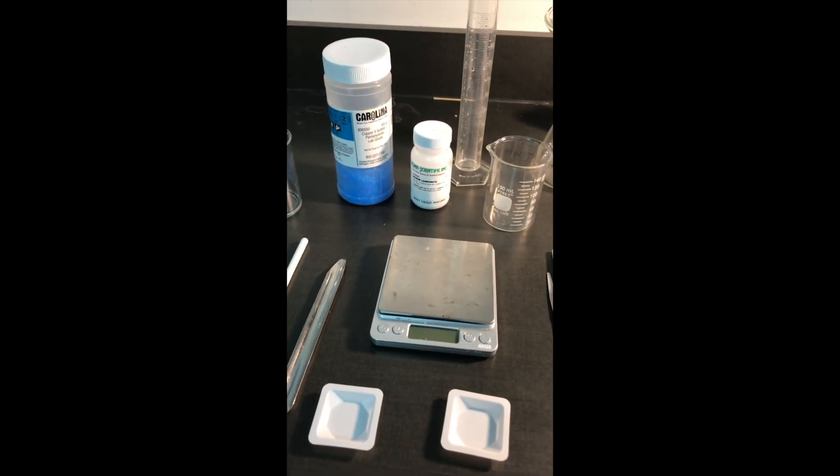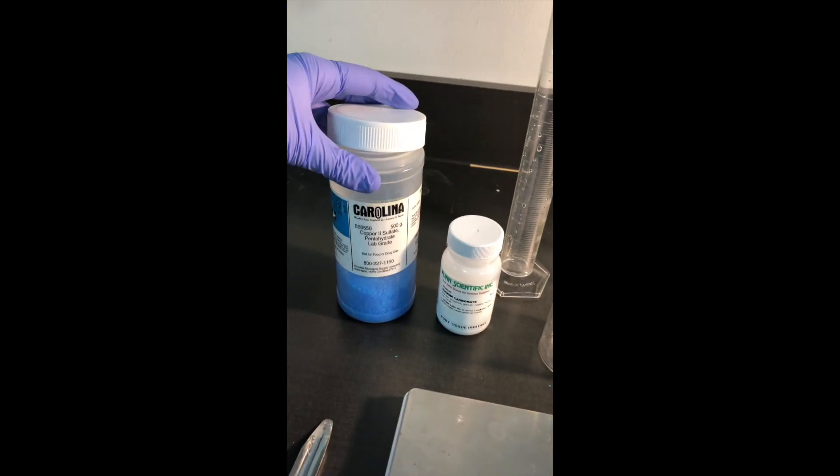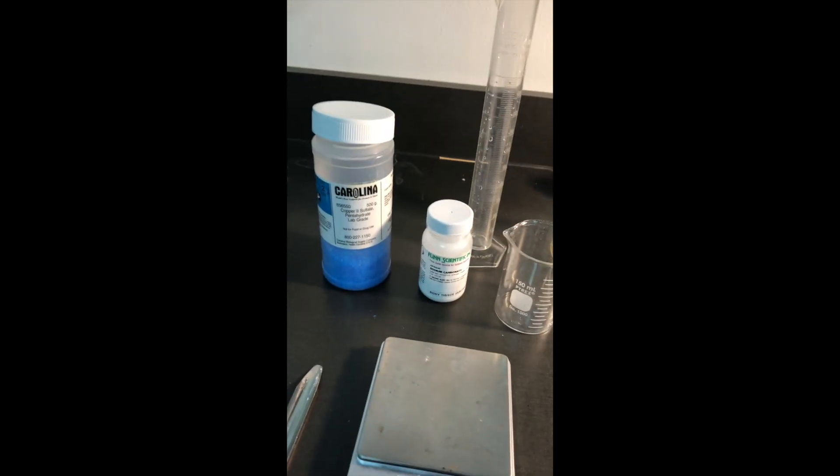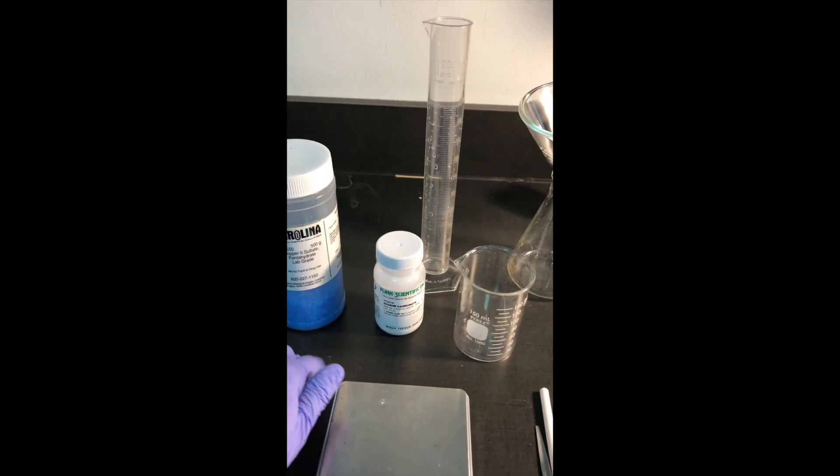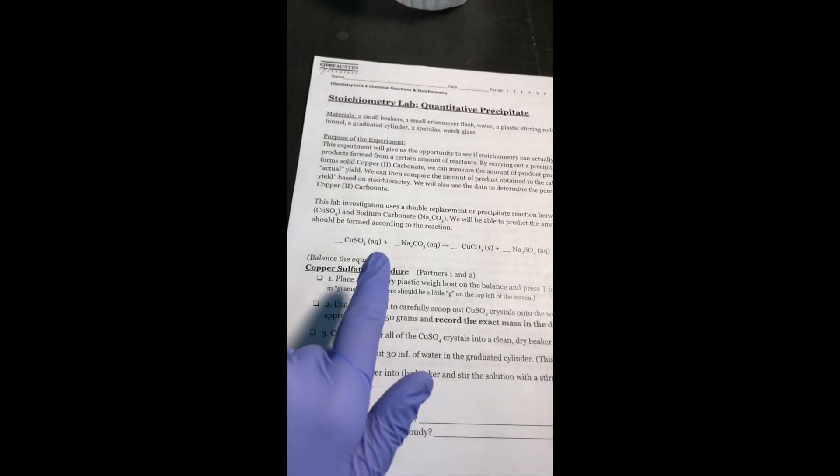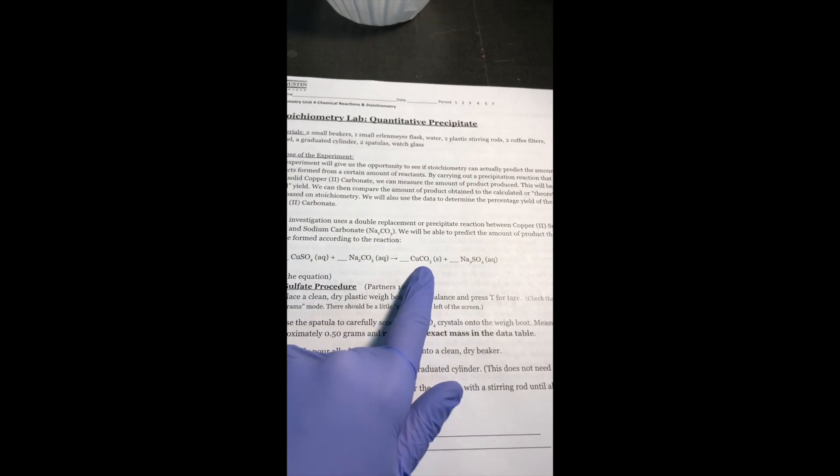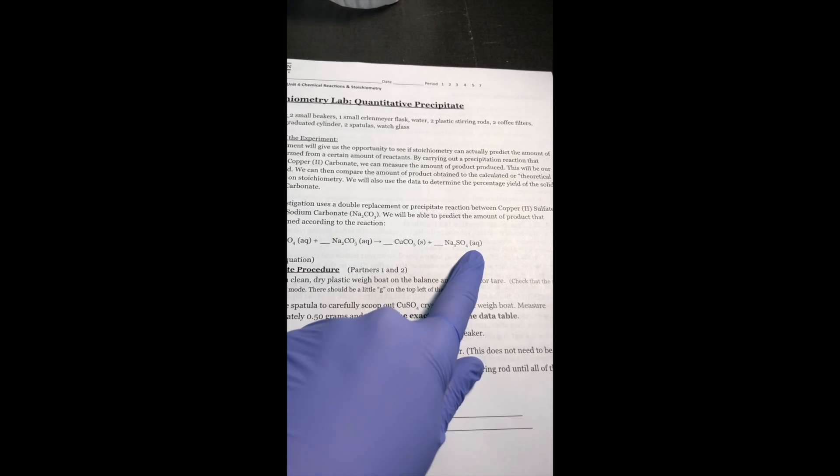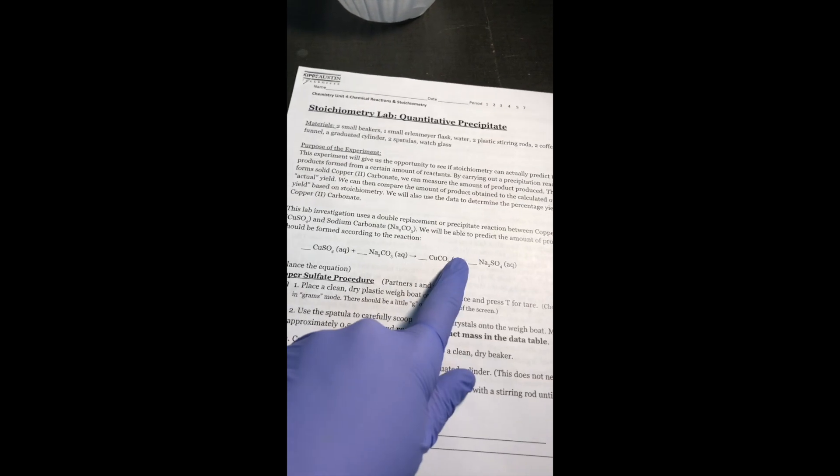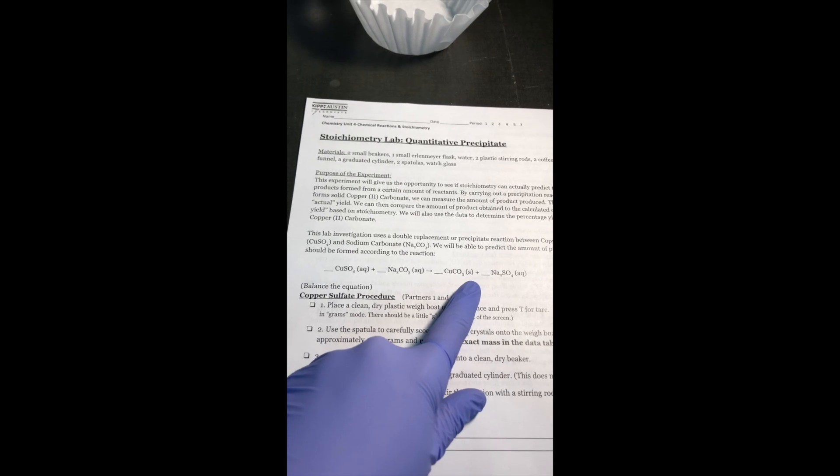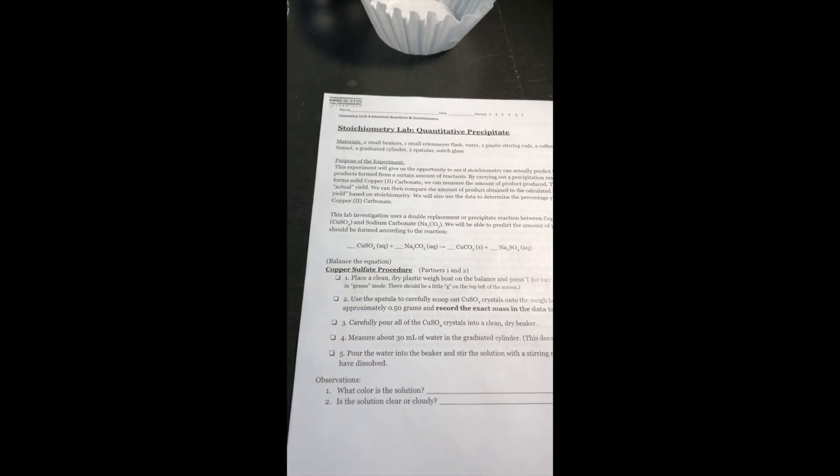We're going to do a double replacement reaction with copper sulfate and sodium carbonate. We're going to make two solutions of these crystals, stir together those solutions and make some products. The products will be, according to my chemical equation, copper carbonate, which will be solid, and sodium sulfate, which will be aqueous or in solution. What we're going to look for is that solid copper carbonate product. We're going to dry it out and see how much of it we made.